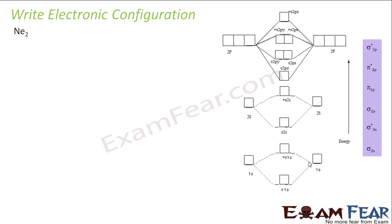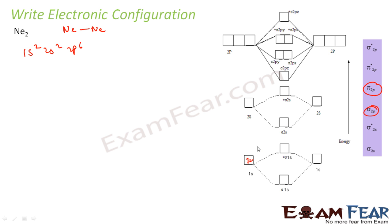Let's take the example of neon. Neon also has the same ordering as oxygen — sigma 2p comes before pi 2p. Ne2 is two neon atoms; the electronic configuration of neon is 1s2, 2s2, 2p6. We fill 4 electrons from inner shells, then 12 electrons from the 2p level — 6 plus 6 — filling all 12. All orbitals are completely filled, so you can write out the full electronic configuration.